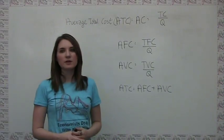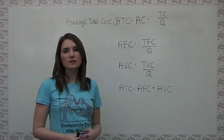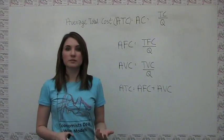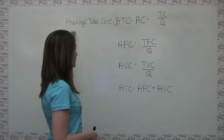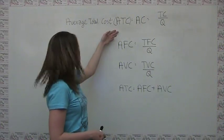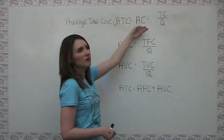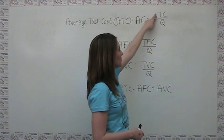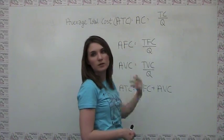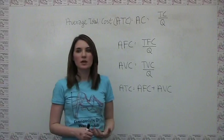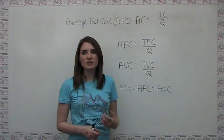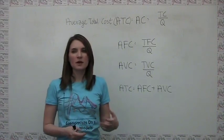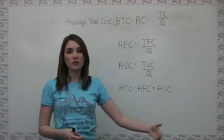As with average revenue, average total cost — sometimes referred to simply as average cost — is just the cost per unit of production. Average total cost, usually abbreviated ATC or simply AC, is just the total cost of production divided by the quantity produced. In general, average total cost initially decreases as quantity increases, simply because the fixed costs of production are getting spread out over more units.